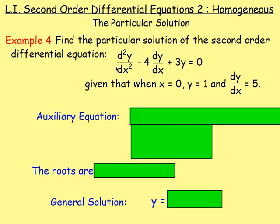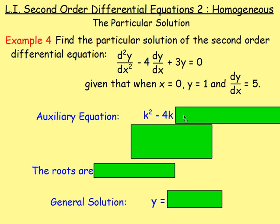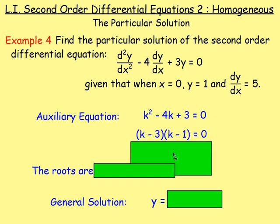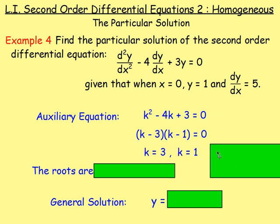Take the coefficients of d²y/dx², dy/dx, and y — we have 1, negative 4, and 3. Our auxiliary equation is k² − 4k + 3 = 0. We solve that by factorising, which gives us (k − 3)(k − 1) = 0, meaning the values of k would be 1 and 3.